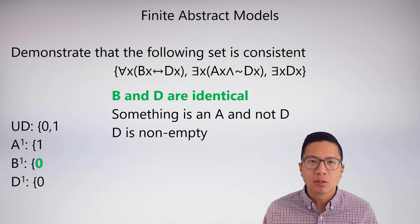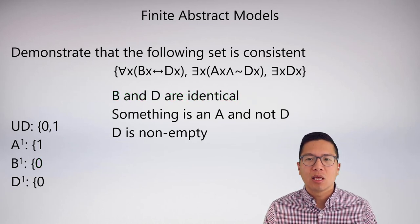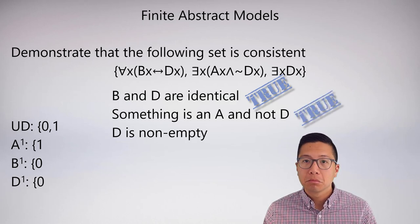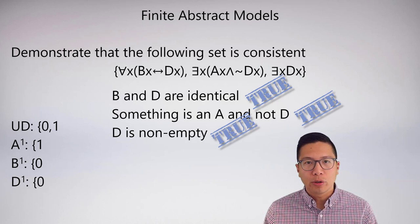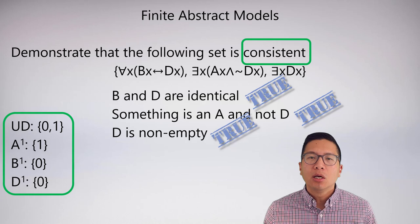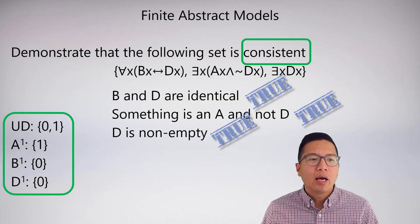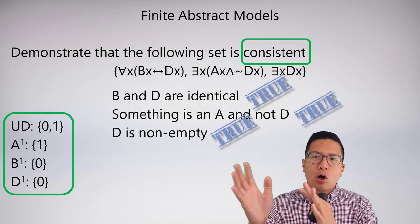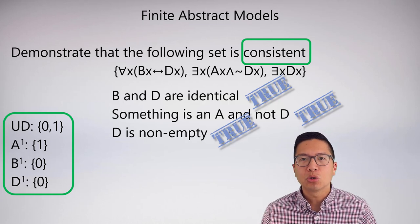When I've finished going through my sentences, I always need to go back and double check. Is it the case that b and d are identical? Yes. Is it the case that something is an a and not a d? Yes. Is it the case that d is non-empty? Yes. I have successfully set all these sentences to be true, demonstrating they are consistent. Once done, I close the sets of all my predicates, and that's my solution. The finite abstract model is what's in the final box; the translations are the working steps.